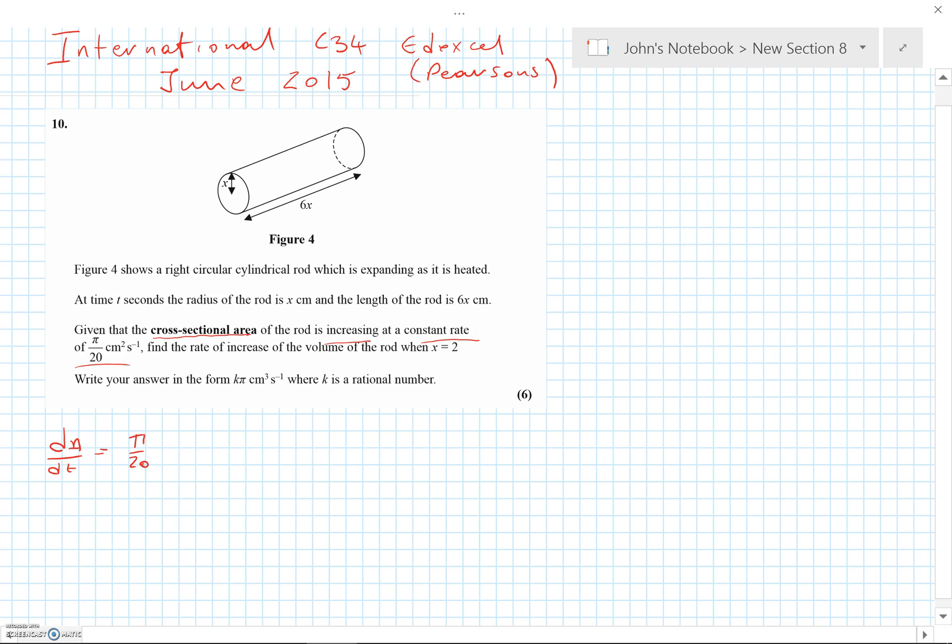We're also told to effectively give a formula for the volume. We can work it out easily because the volume will be equal to this cross-section times this length. It's the formula cross-sectional area times length, or πr²h if you want to use it that way. So that's πx² times 6x.